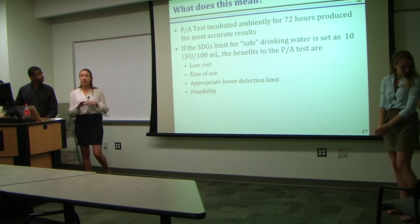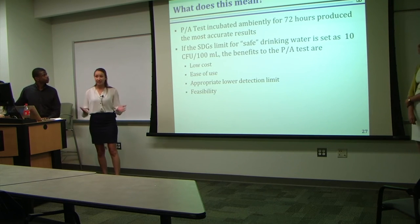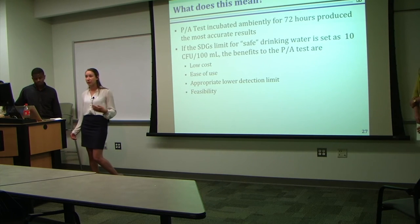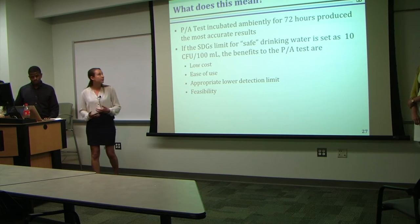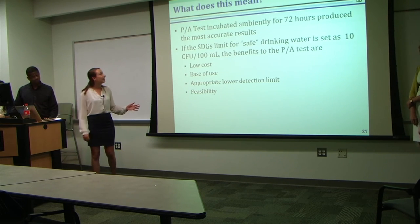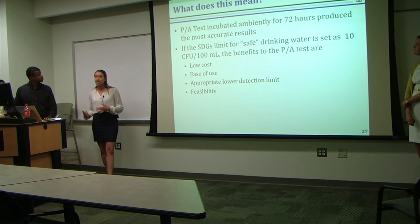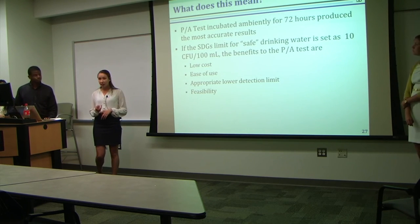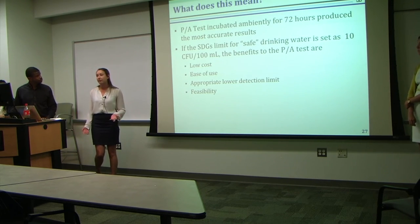So what does this mean? If you get one take-home message: we were able to find, as was our goal, that the PA test when incubated ambiently for 72 hours produced the most accurate results—that was good news. Furthermore, if the Sustainable Development Goal sets the limit for safe drinking water to be 10 CFU per 100 milliliter, then we found that the PA test kit is low cost, easy to use, has an appropriate lower detection limit, and based on our results, it's a very feasible method.